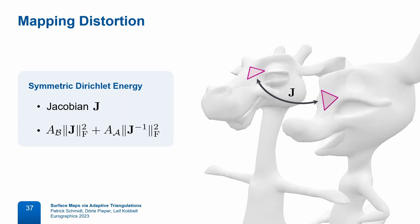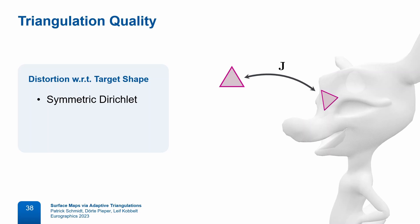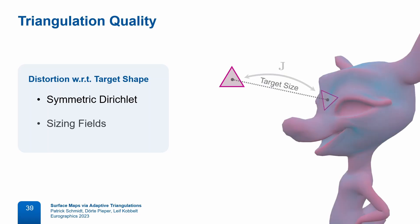Besides the two instances of each triangle being similar to each other, we also want to individually control triangle quality. We choose an ideal shape and size for each triangle and measure the symmetric Dirichlet energy between the ideal target triangle and the actual triangle on the surface. We always choose an equilateral shape and pick the size adaptively from a sizing field defined on the input surface. When differentiating our objective, we take into account how the target size changes continuously as a triangle moves over the surface.